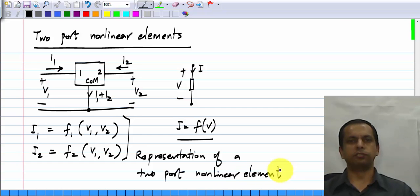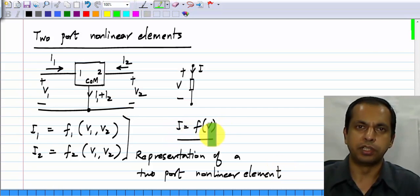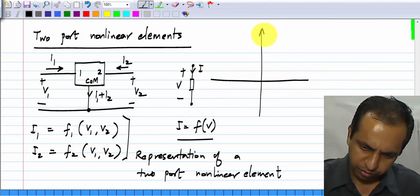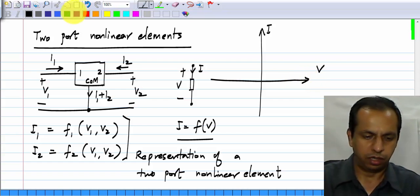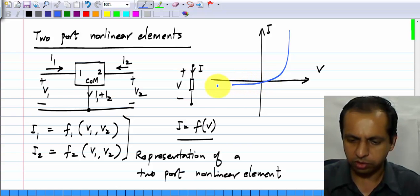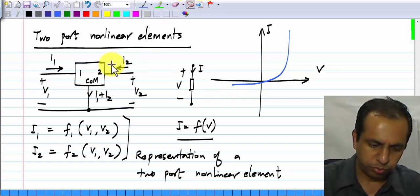That is the representation of a two port nonlinearity. For a single port nonlinearity, we could give this expression, we could also draw a graph I versus V and for the particular example of the diode, it happened to be like that, although we can have anything that we want. We can make a similar graphical representation for the two port.